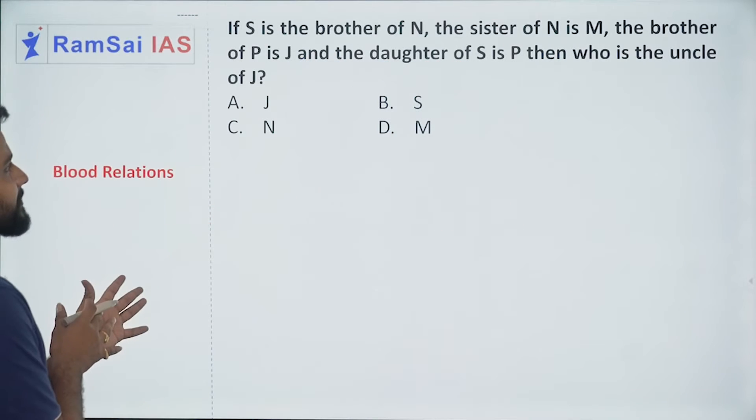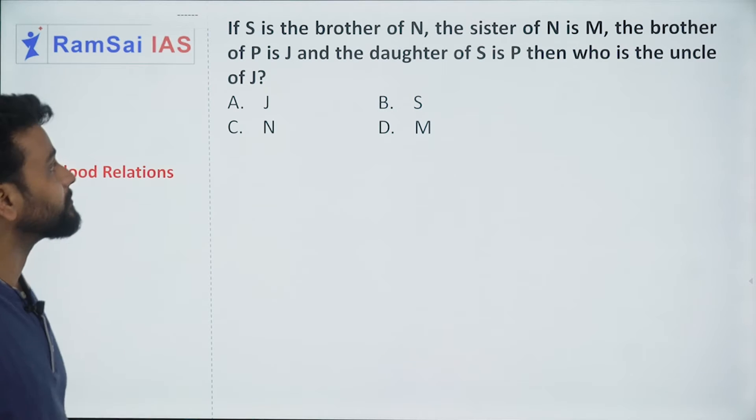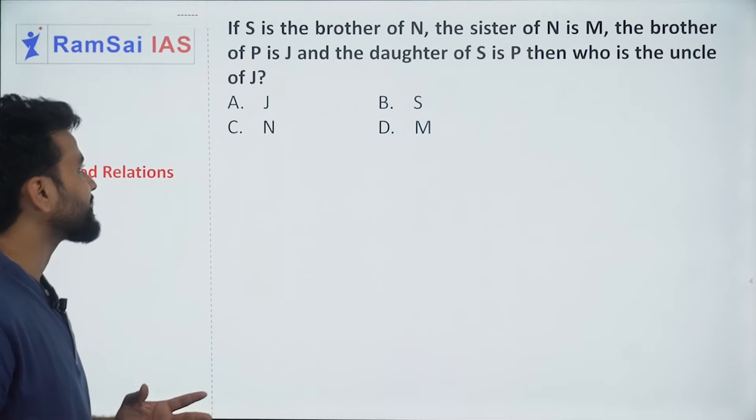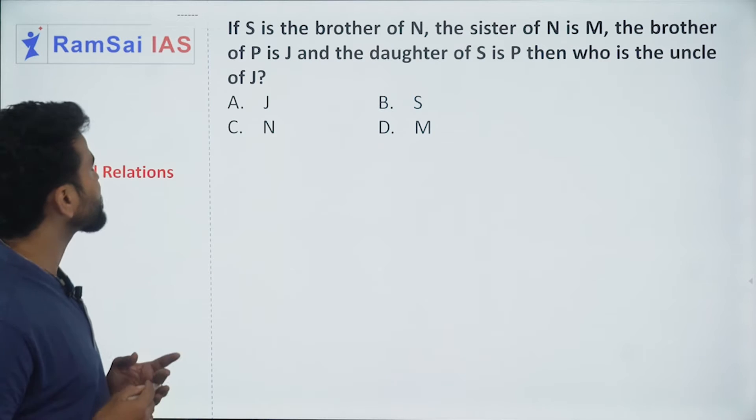If S is the brother of N, the sister of N is M, the brother of P is J and the daughter of S is P, then who is the uncle of J?